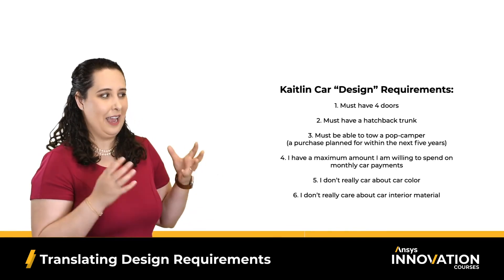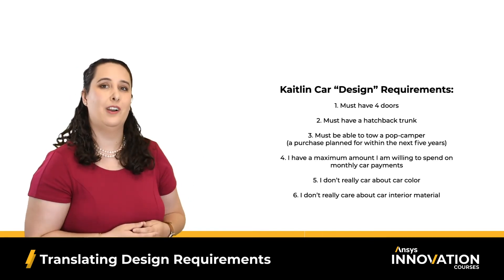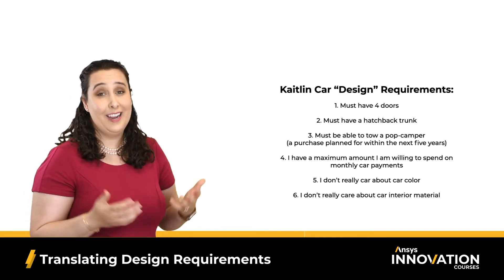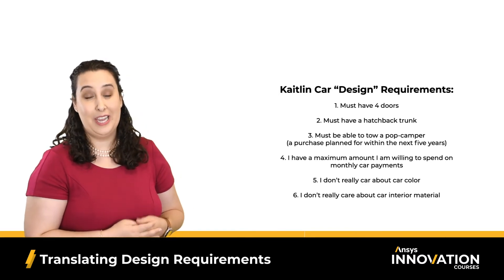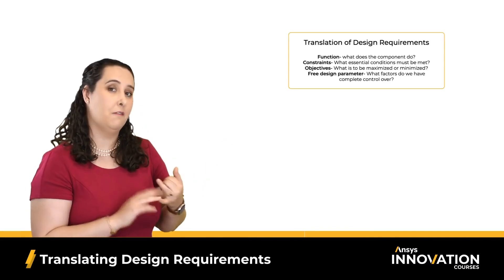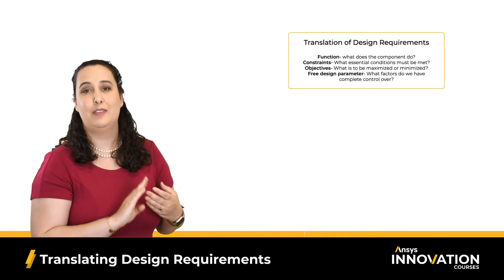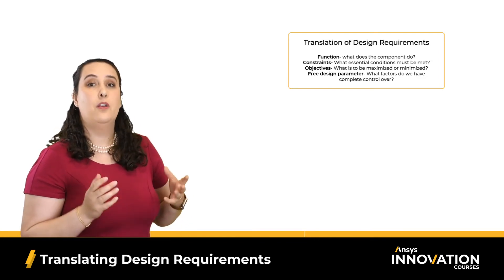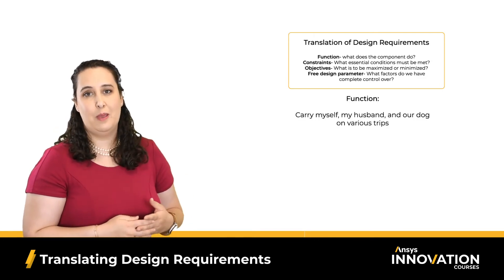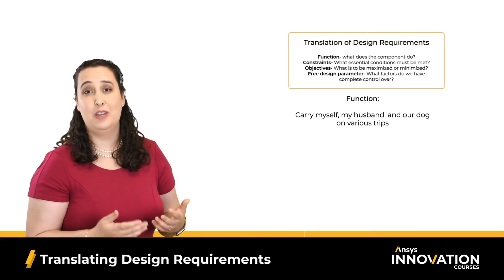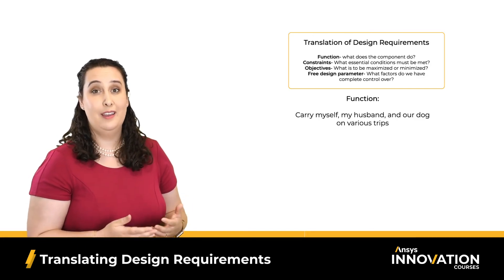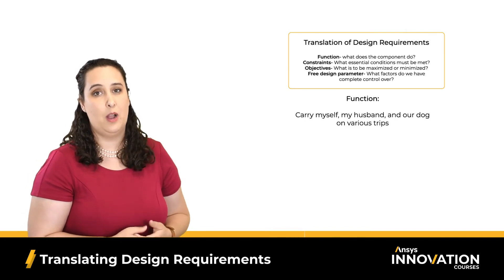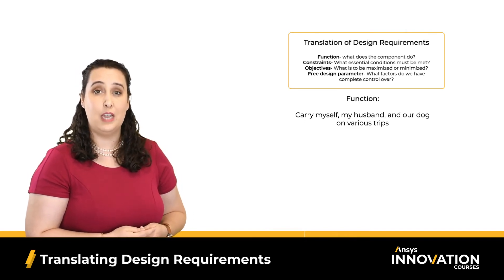How do I take this list and actually come up with a car? Well, I can use the selection methodology and break down these requirements into functions, constraints, objectives, and free design parameters. So the function of my car is that it has to be able to transport me, my husband, and our dog on various outdoor camping and hiking trips, as well as long-haul drives to see family and friends who live out of state.